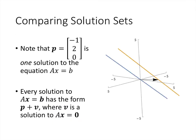The solutions to the non-homogeneous system are not simply a span of vectors, because there is no scalar coefficient on the vector (-1, 2, 0). That vector is one particular solution to Ax equals b — obtained by letting x3 equal zero. So the solutions look like x3 times the vector (4/3, 0, 1) plus the vector (-1, 2, 0). If we let x3 be zero, we just get (-1, 2, 0).